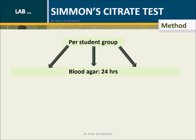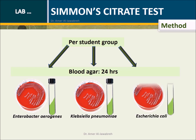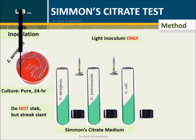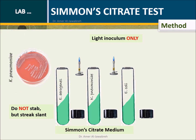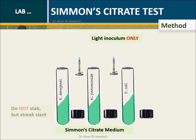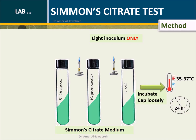Method: Provide each student group with three Simmons citrate slants and culture plates of Enterobacter aerogenes, Klebsiella pneumoniae, and Escherichia coli. Using an inoculating wire, pick up a light inoculum or pure colony from the culture plate and zig-zag streak on the surface of the slant — do not stab. Incubate at 35 to 37 degrees Celsius for 24 hours. Cap loosely to allow oxygen in to start utilization of citrate.